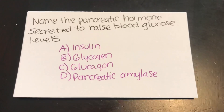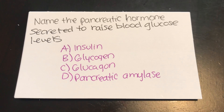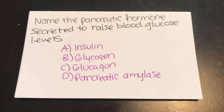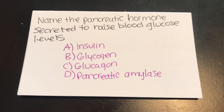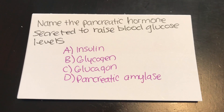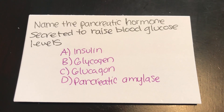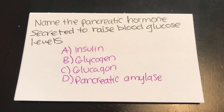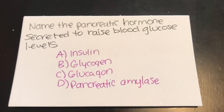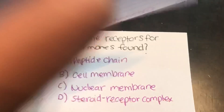Name the pancreatic hormone secreted to raise blood glucose levels. A, insulin. B, glycogen. C, glucagon. Or D, pancreatic amylase. Answer: C, glucagon.